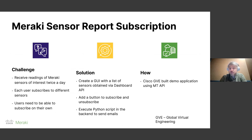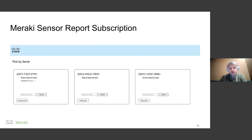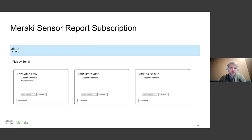Our GDE team, the global virtual engineering team, built a demo application using the MT API. In this UI, you could pick a number of serial numbers and then subscribe your email address to them. You could also, if you were an app developer, work on subscribing to webhooks instead of emails. Emails are a little bit easier for people to handle, but webhooks can get sent to WebEx Teams channels, Slack channels, Microsoft Teams channels. We can also set up PagerDuty, Datadog, Splunk via webhooks — all those other logging and messaging applications. That would be an integration.